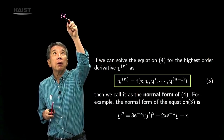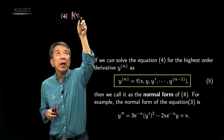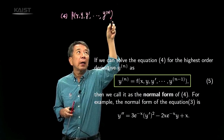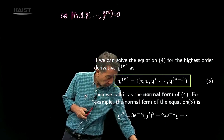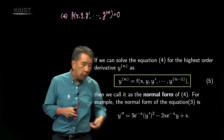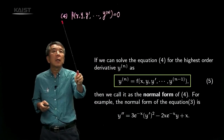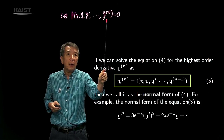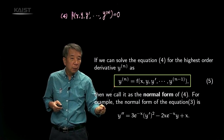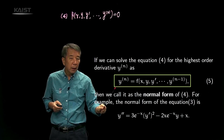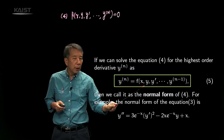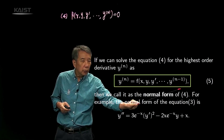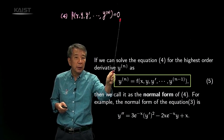To clarify: equation number 4 is capital F of x, y, y prime, and the nth derivative of y equal to 0. What this means is that if you can solve this equation for its highest order derivative — the nth derivative of y expressed as a function of all the other variables — then we call that the normal form of this equation.